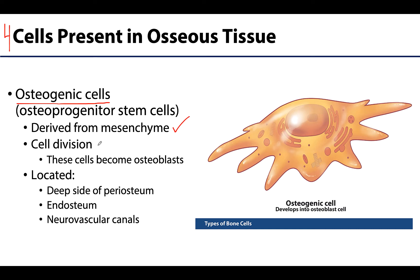This is an important point: these are the only bone cells to undergo cell division. None of the other three that we discuss will be able to do that. As these cells divide, they will eventually develop or convert into osteoblasts, which are very important in terms of bone tissue deposition. Osteogenic cells can be found throughout life.